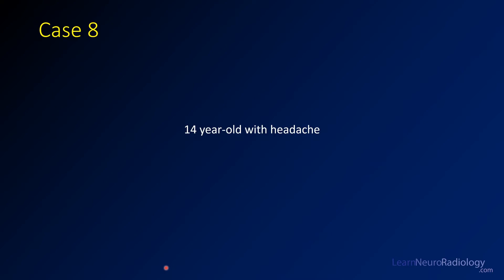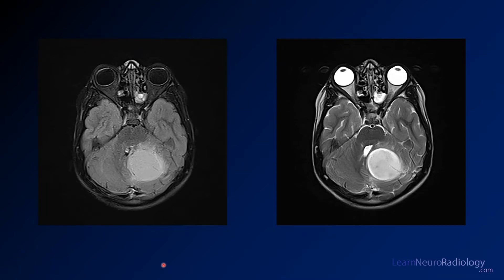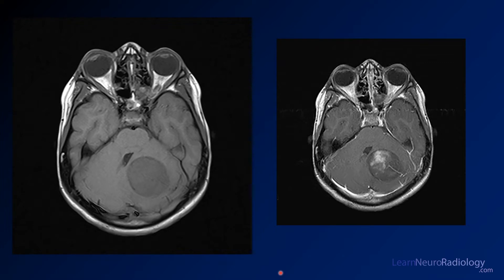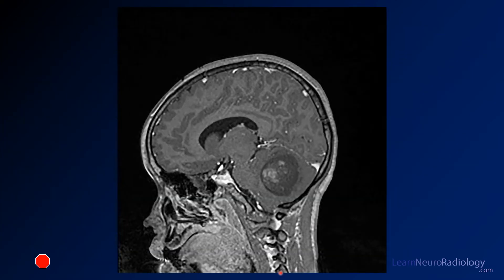Case 8 is a 14-year-old with headache. Here you have some images from an MR of the brain through the posterior fossa. There's a FLAIR on the left and a T2 on the right. Here you have pre and post contrast images. Here's a final sagittal post contrast image.